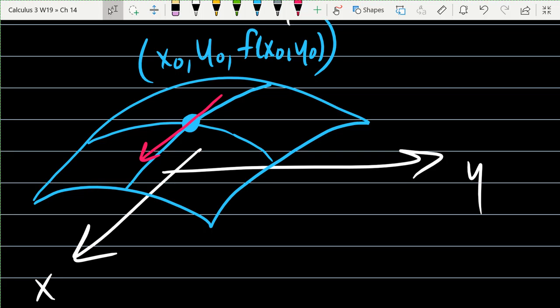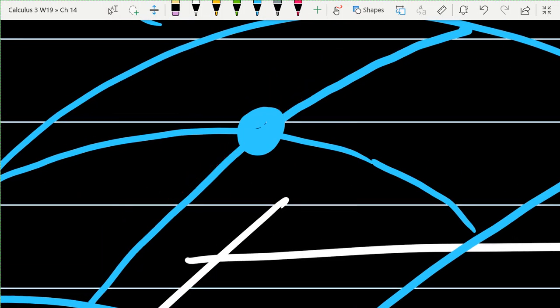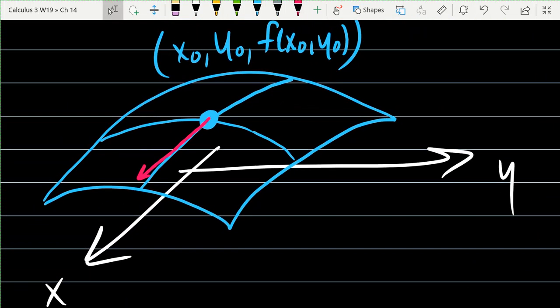All right, so if we go along the x-direction, does it look like, and I really didn't mean to draw the back part of this arrow up, I really just wanted to think about going that direction. Does it look like we're going uphill or downhill? Downhill a little bit. So the number we get, this partial derivative we get, is going to be a number, and it's going to be negative if we're going in the x-direction, we're going slightly downhill.